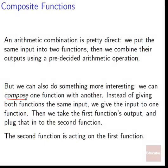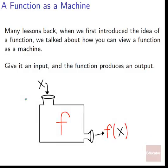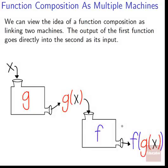The second function is acting on the first function. Many lessons back, we first introduced the idea of a function and talked about how we can view it as a machine — it takes in inputs and the function produces outputs. x goes into the machine f and then gets spat out after having been acted on. The function is some process; it does some transformation on x so we get f of x. We can expand this idea into function composition, which is just linking multiple machines together in series.